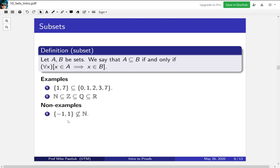Some non-examples. {−1, 1} is not a subset of the naturals. Now here we need to be careful about quantifiers. To show that something is a subset, you need to show for all x some implication happens. But to show that something is not a subset, well, what's the negation of a for all statement? It's a there exists statement.